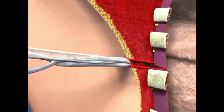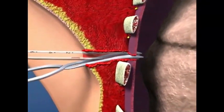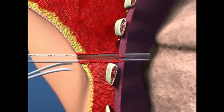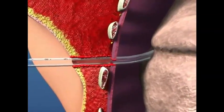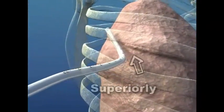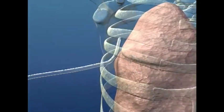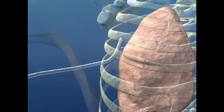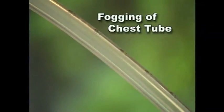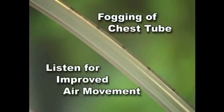Advance the chest tube into the pleural space to the desired length. All of the drainage holes should be well inside the chest cavity to provide a proper seal and prevent leakage. The chest tube should be positioned posteriorly and aimed superiorly in the chest cavity. This will allow for maximum drainage in the supine position. It may be possible to see fogging of the chest tube with expiration and it may be possible to listen for improved air movement on the affected side.